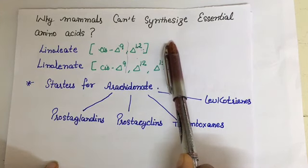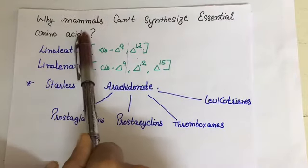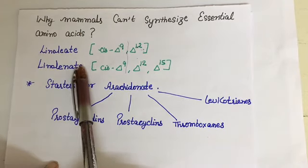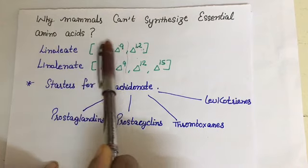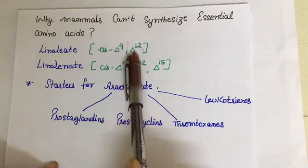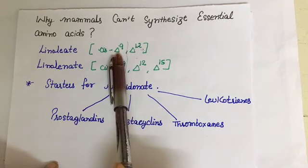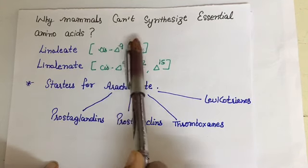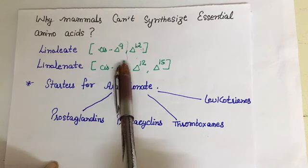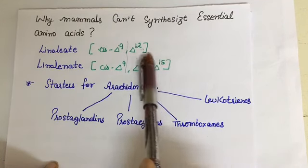And these essential amino acids are linoleate and linolenate. Linoleate, you can see, has two double bonds - delta-9 and delta-12, meaning the double bond is present at carbon number 9 and 12. And in case of linolenate, it is 9, 12, 15, so there are three double bonds.